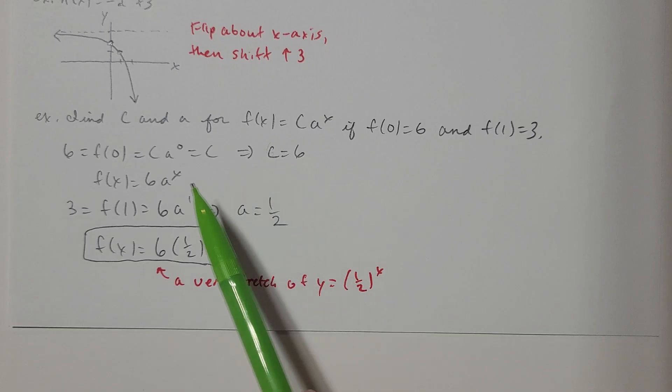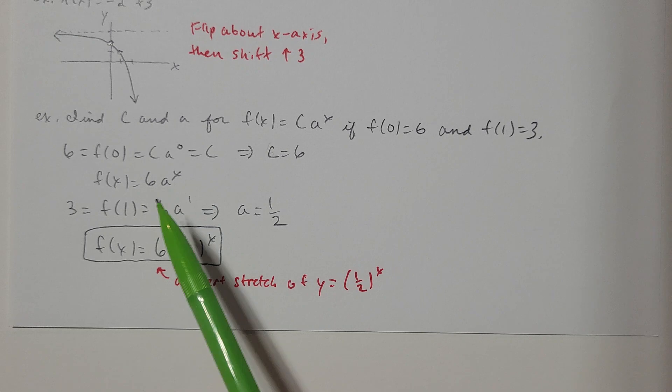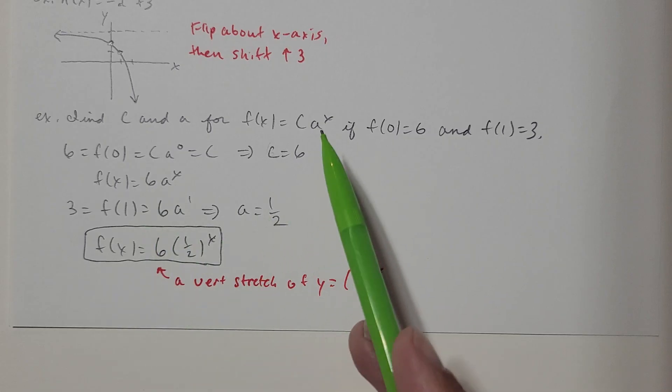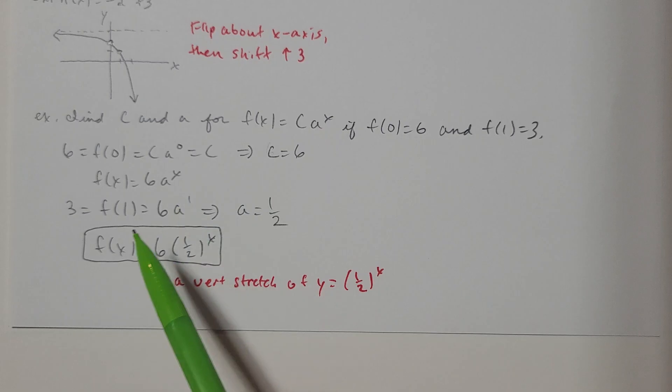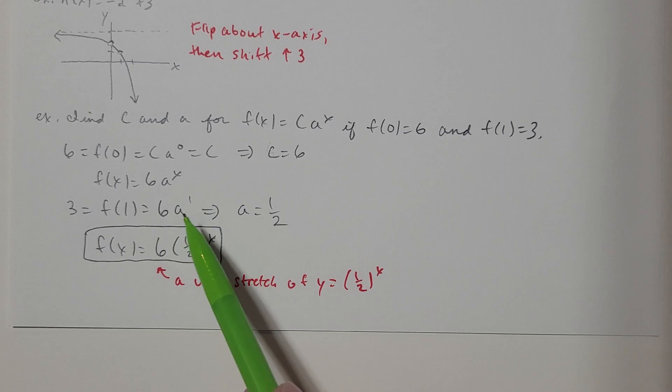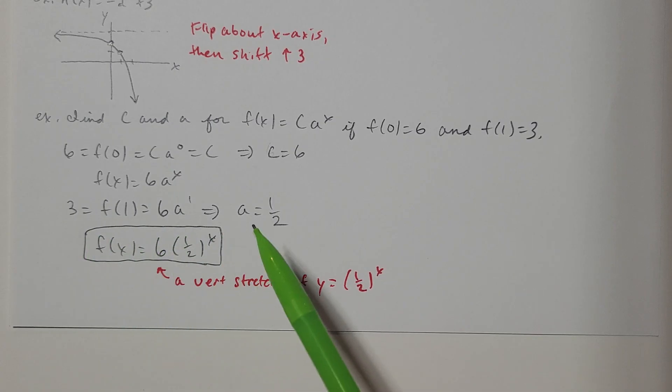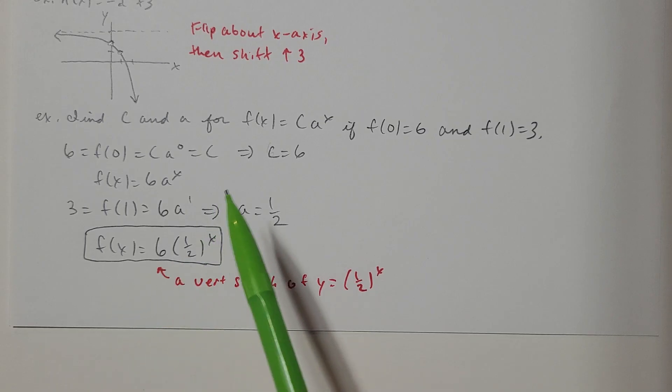So far, I've got the function f(x) equals 6 times A to the x. Also, f(1) is 3. So f(1) means that if I replace x with 1, I have 6 times A to the 1st, so that'd be just 6A. And f(1) is 3. So 3 equals 6A means that if I divide both sides by 6, A is 1 half. So the function that we're talking about here is f(x) equals 6 times 1 half to the x.